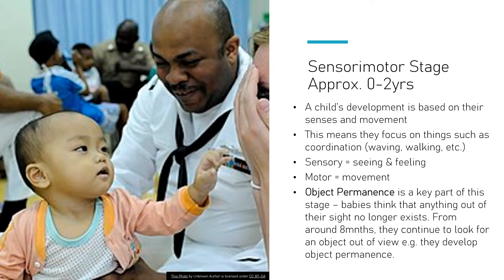You might have seen younger children trying to play hide and seek, and they cover their own eyes rather than actually hiding, because they think if they can't see you, they don't exist anymore either. Around the eighth month mark, children start to understand that just because they haven't seen something, doesn't mean it's completely gone. So if you put a ball under three different cups and move it around before eight months, a baby will think the ball has disappeared — but when they develop further, they know the ball is still there. That's what we call object permanence.